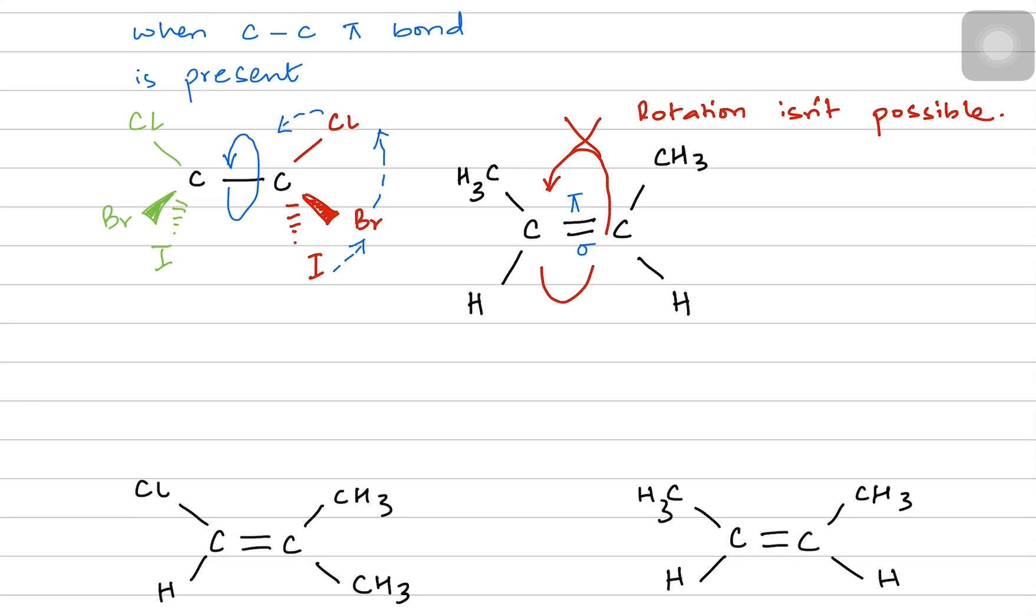Since rotation is not possible, the groups which are present on carbon one and the groups which are present on carbon two, they determine whether geometrical isomers will be made or not. Now, when we talk about geometrical isomers, let's study it with an example.